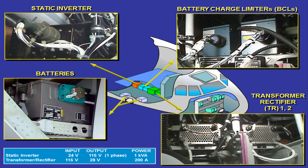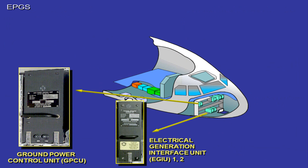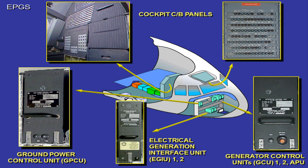The static inverter converts the direct current from battery 1 into an AC current if no other source is available. The battery charge limiters, BCLs, control the battery coupling and uncoupling to the DC battery bus to ensure battery charging and protection. Each battery is rated at 24 volts with a capacity of 23 ampere hours. All TRs are identical and interchangeable. The ground power control unit, GPCU, connects the external power to the aircraft network if all parameters are within the limits. It is also the central unit connected to the centralized fault display unit for onboard maintenance purposes.